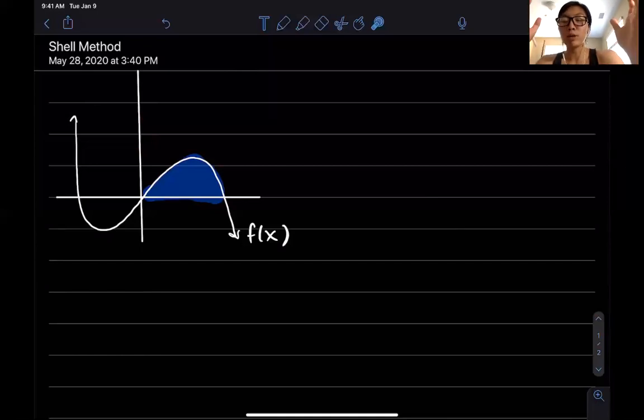When I keep doing that, I'm gonna get a bunch of cylinders. Since we're doing volume, basically what I can do is if I take the area of all of those cylinders and add them all together, I'm gonna get the total volume.